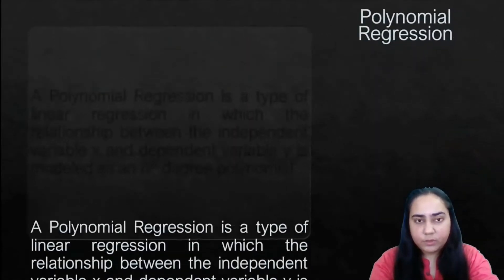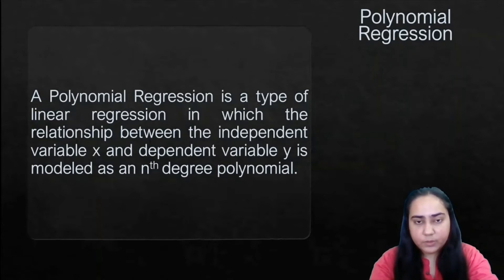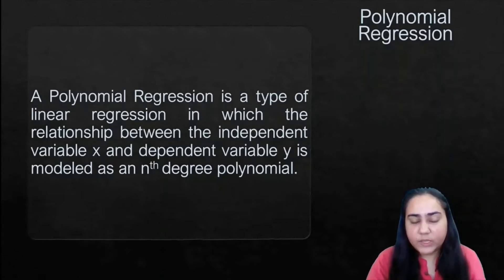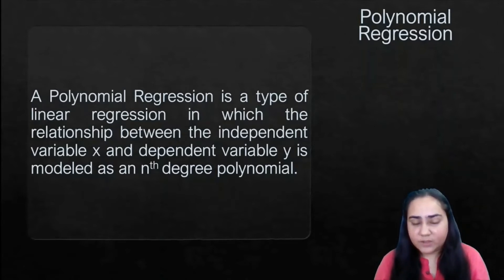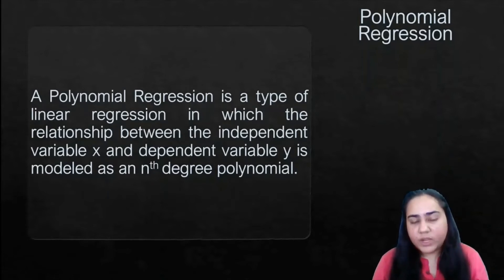We'll start with polynomial regression. A polynomial regression is a type of linear regression in which the relationship between the independent variable x and the dependent variable y is modeled as an nth degree polynomial. For a simple linear regression, the polynomial was y = mx + c or y = ax + b, which is not an nth degree polynomial.